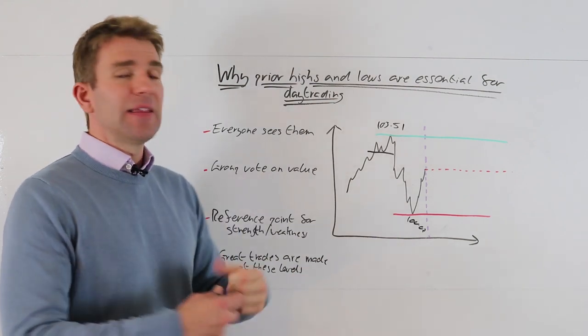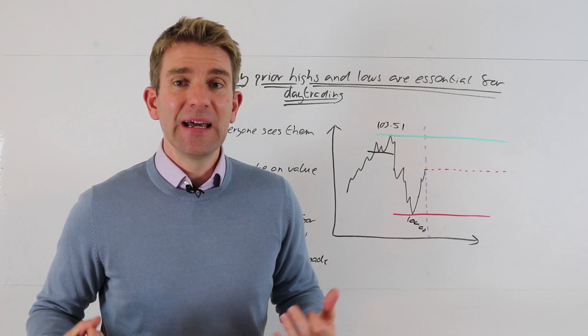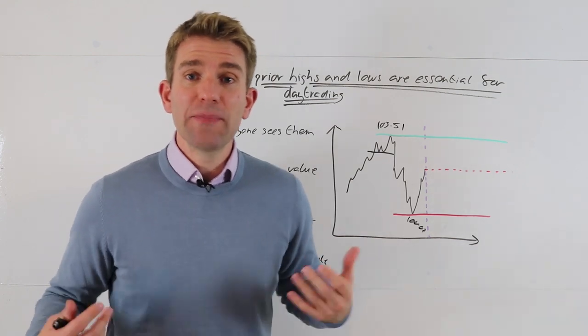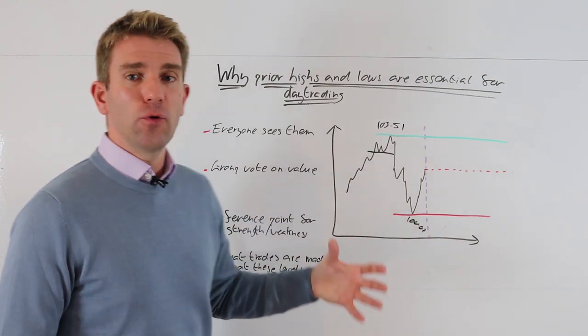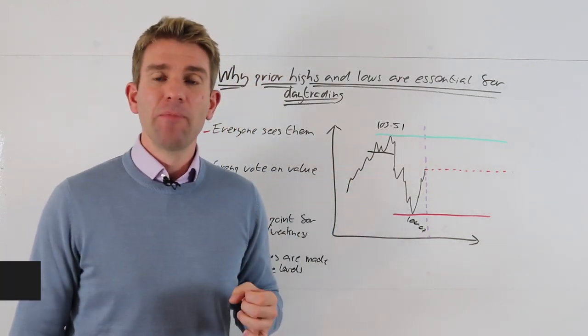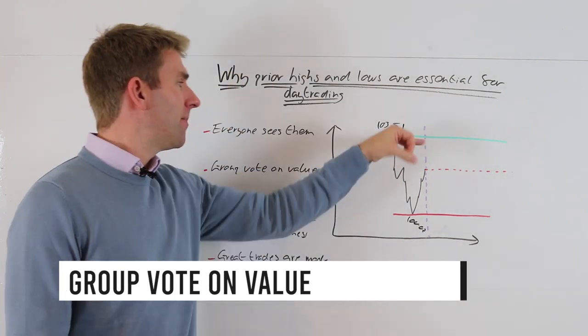So everybody sees it, everybody knows where it is, everybody has it on their chart. That's it. And when everyone knows that something's there and you know that everyone's looking at it, then there's opportunity, opportunity really presents itself. Basically, think about what a high or how a high or low is formed - group vote on value. It's not one person has decided to buy above 51.